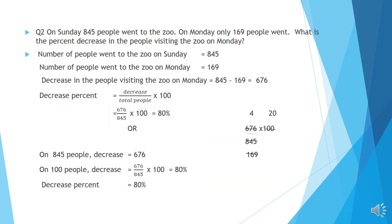Question number 2. On Sunday 845 people went to the zoo. On Monday only 169 people went. What is the percentage decrease in the people visiting the zoo on Monday? Number of people on Sunday is 845 and on Monday is 169. The difference is 845 minus 169, which gives 676. We need to find the decrease percentage.